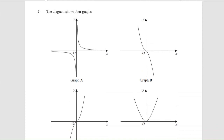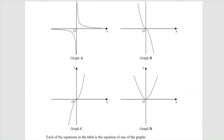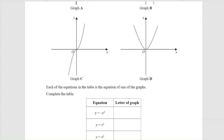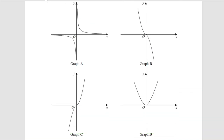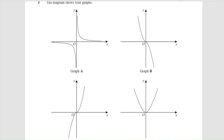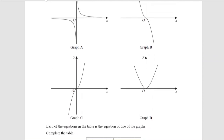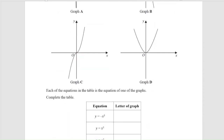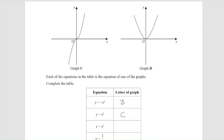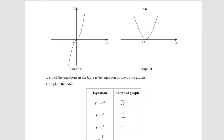Question 3. I've got a diagram showing four different types of graphs and we've got to link them to the statements. This is going to be the reciprocal. This is going to be a negative cubic. This is going to be a positive cubic, and this is going to be a positive quadratic. So linking them: the negative cubic would be graph B, the positive cubic would be graph C, the quadratic would be graph D, and the reciprocal would be graph A.